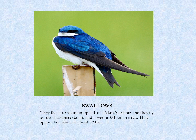These swallow birds spend their winter time in South Africa. They can fly at a maximum speed of 56 km per hour and they cross the Sahara Desert. They cover around 321 km in a day. In your textbook, fill in the blanks with the spelling for swallows.